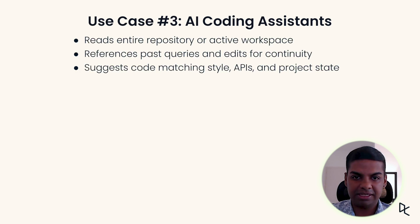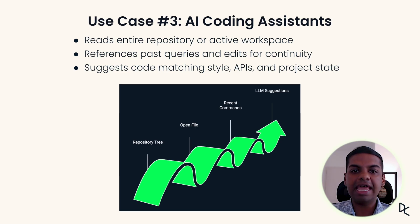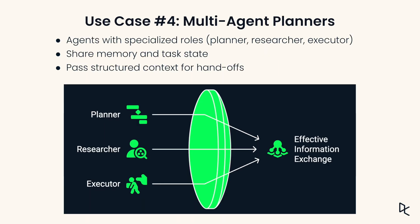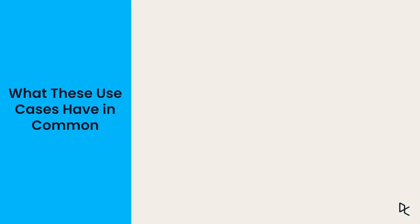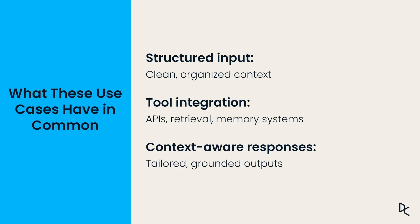Next, we have AI coding assistants. They scan your entire repository, see open files, recall last comments, and suggest code that matches your project's style and architecture. They are context engineers, not just autocomplete machines. Multi-agent planners split tasks across specialized roles — a planner, a researcher, an executor — and coordinate by sharing structured context: the plan, the evidence and the constraints. Across all of these cases, the pattern is the same: structured input, integration with the right tools, context-aware responses — different tasks, same foundation. That is effective context engineering.